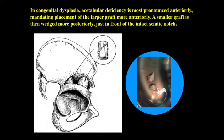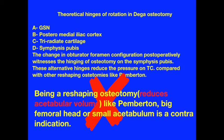The theoretical hinges of rotation in Dega osteotomy are believed to be the greater sciatic notch, the posterior medial iliac cortex, the tri-radiate cartilage, and the symphysis pubis. This theory is supported by the burden on the tri-radiate cartilage seen in other reshaping osteotomies like Pemberton, and by changes in the configuration of the obturator foramen on post-operative x-rays.